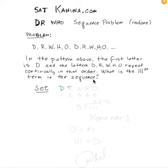D, R, W, H, and O — that's a shoutout to my daughter who's a Doctor Who fan. Then we have to number the elements of the set. Do you have to know what an element is? No, not really. Just number them: D is 1, R is 2, W is 3, H is 4, and O is 5.